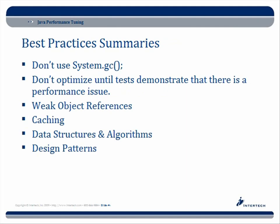Some best practice summaries: avoid using System.gc(), which is a hint to the garbage collector that it should run — typically we don't know when it should run, so that's left up to the JVM. Don't optimize until tests demonstrate there is a performance issue. Consider using weak object references, and consider caching. Look at data structures and algorithms — some can be tested with micro benchmarks, and there are great books on algorithm performance and the strengths and weaknesses of different data structures, such as the difference between ArrayList and LinkedList. And consider performance design patterns, which are designed specifically for improving performance.